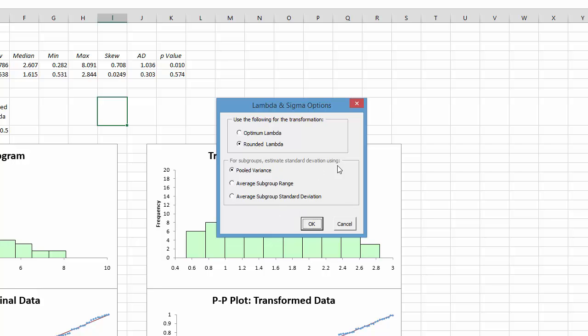This is when you have subgroups. You can pick which standard deviation estimation you want to use, either pooled variance, average subgroup, or range, or average subgroup standard deviation.